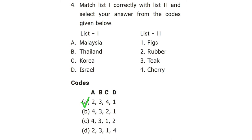That means: Malaysia — rubber, Thailand — teak, Korea — cherry, Israel — figs.